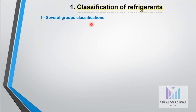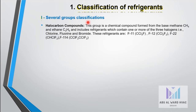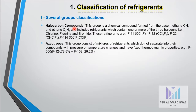In the first group classification, we have hydrocarbon compounds including methane, propane, and chlorine. Second, we have azeotropes including F12 and F152.